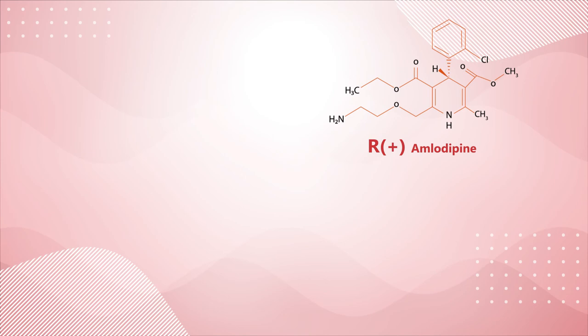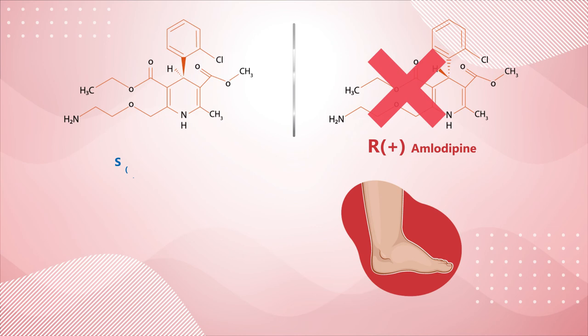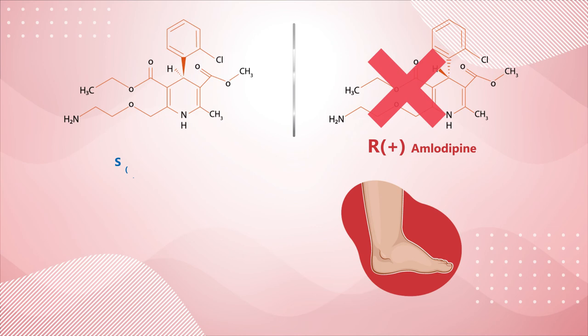It has also been observed that the R-enantiomer has a greater tendency for adverse events such as pedal edema. Discarding the R-enantiomer to make a chirally pure compound containing S-amlodipine makes the treatment safer.